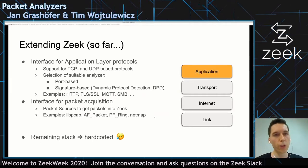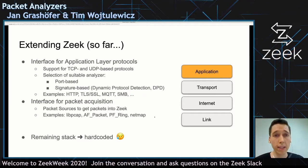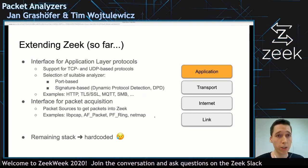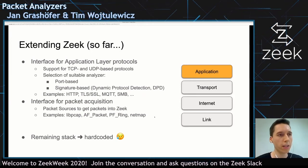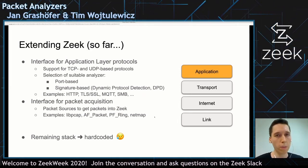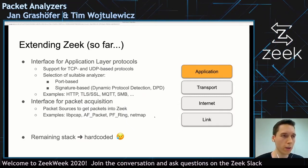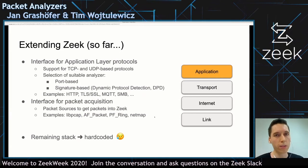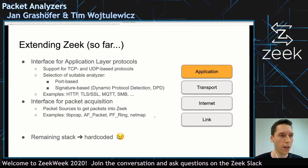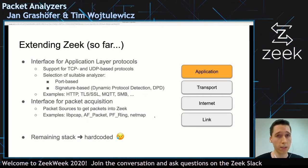If you want to extend the capabilities with regards to protocol parsing or packet handling in Zeek, so far there are two options. At first, you can write your own protocol analyzer — that's the interface for application layer protocols. Zeek so far supports TCP and UDP-based protocols. The suitable analyzer for a protocol is either determined port-based or signature-based. Signature-based is using the dynamic protocol detection — that's a very cool feature.